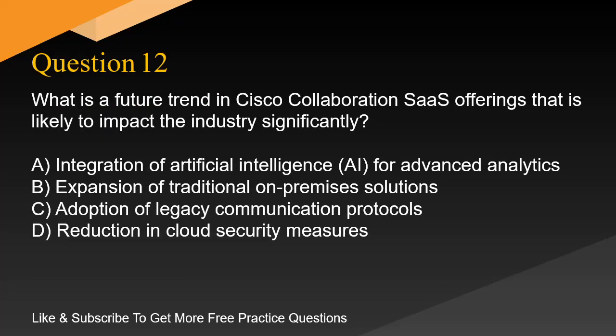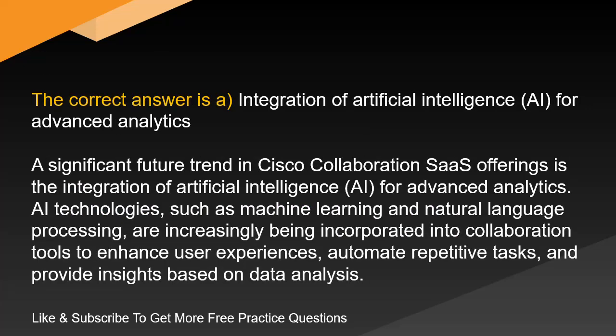Question 12. What is a future trend in Cisco collaboration SaaS offerings that is likely to impact the industry significantly? A. Integration of artificial intelligence (AI) for advanced analytics. B. Expansion of traditional on-premises solutions. C. Adoption of legacy communication protocols. D. Reduction in cloud security measures. The correct answer is A. Integration of artificial intelligence (AI) for advanced analytics. AI technologies such as machine learning and natural language processing are increasingly being incorporated into collaboration tools to enhance user experiences, automate repetitive tasks, and provide insights based on data analysis.